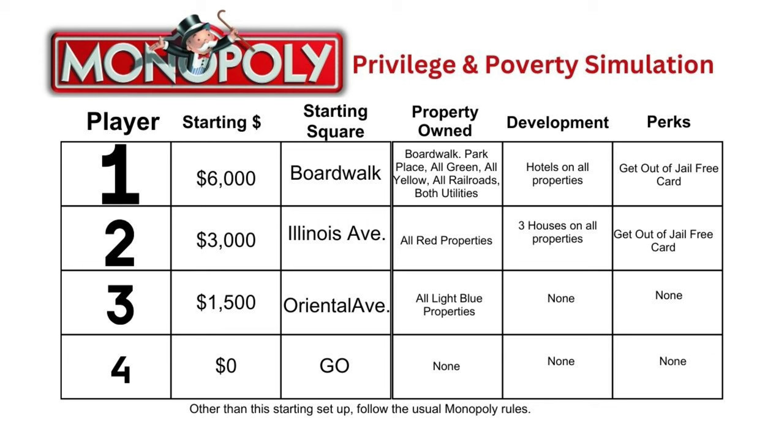Player two goes second and starts with $3,000. Player two begins the game on Illinois Ave, already owning all the red properties, each with three houses already on them — that means player two goes into the game with double the starting money, though player one has much more. Player three goes third and starts with the usual $1,500 in Monopoly money, begins on Oriental Ave, and owns the light blue properties, but they are totally undeveloped. Player four and every other player — five, six, however many — begin with no money, just a playing piece. Other than that starting arrangement, all the rules of Monopoly apply as usual.